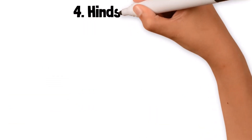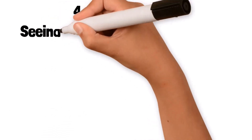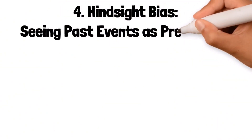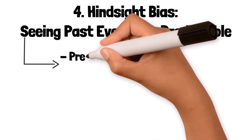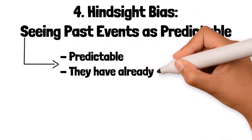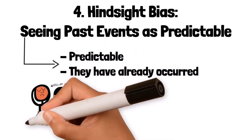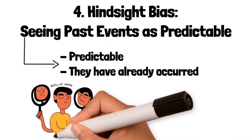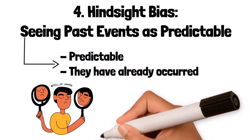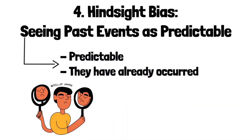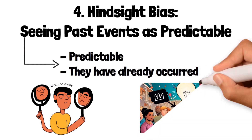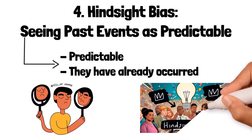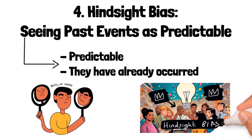4. Hindsight Bias: seeing past events as predictable. Hindsight bias is the tendency to see events as having been predictable after they have already occurred. People often believe they knew it all along once they see the outcome, even if there was little basis for predicting it beforehand. For example, after a stock market crash, people might claim they knew the market was going to crash, even though they had no clear evidence or reason to predict it at the time.